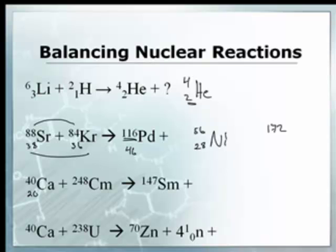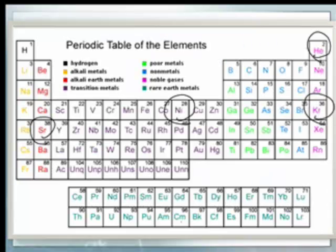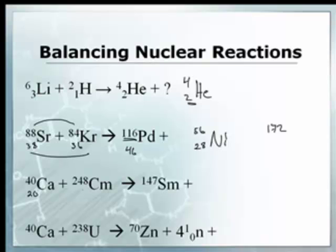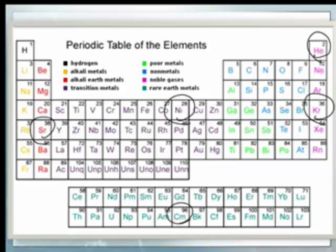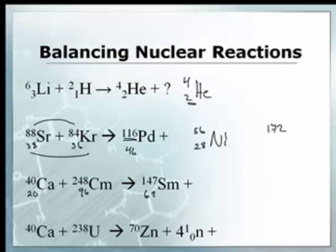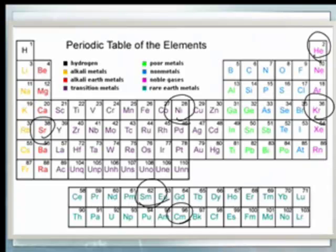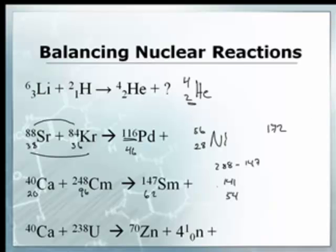Calcium is element 20. Californium CM is 96. Am I going too fast? Pause me, okay? And then SM. Samarium, I believe. I don't know where samarium is. It's element 62. So the tops add up to 288. 288 minus 147 is 141. And then 116 minus 62 is 54. So we go look on our periodic table, find element 54. And it's xenon. You're just adding them up, guys. Now this one's a little tricky.